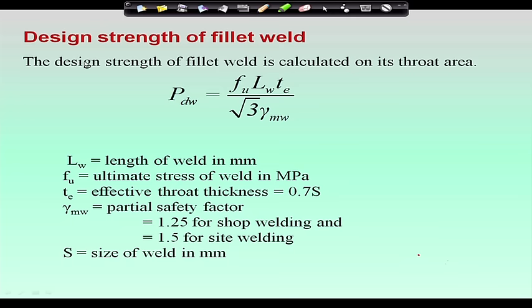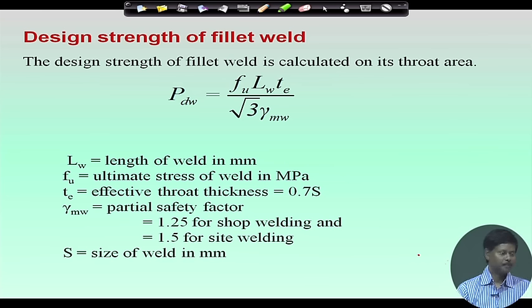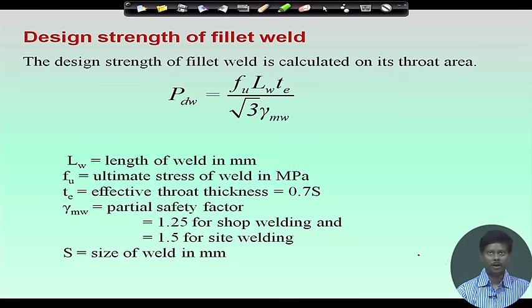I am giving the same formula here: P_dw = f_u × l_w × t / (√3 × γ_mw), where t is the effective throat thickness found as k×s, and for a right angle we use 0.707s. Based on this, we will work through an example showing how to calculate weld length for a given load and how to distribute the weld length on different sides.